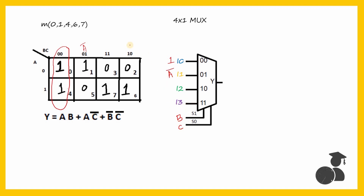For B=1, C=0 — that is the last column of the Kmap — the output follows A: when A is 0, output is 0; when A is 1, output is 1. So I2 is A. When both B and C are 1, again the output follows A — when A is 0 we get 0, and when A is 1 we get 1. So I3 is also A.